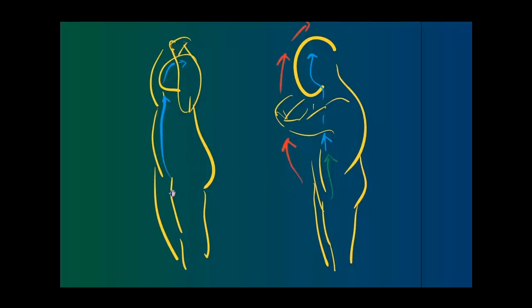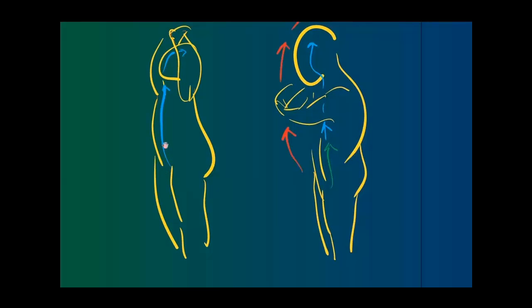For Qi Gong, it's really to get the Qi flow going up, going up all the way to the head. And this line here is a meridian called the Conception Meridian.